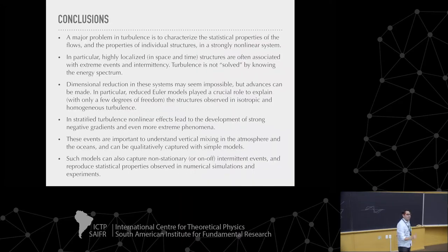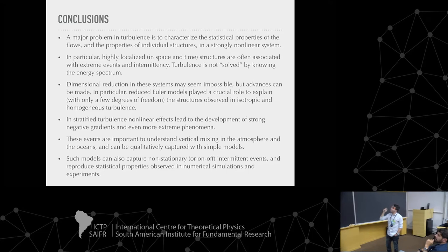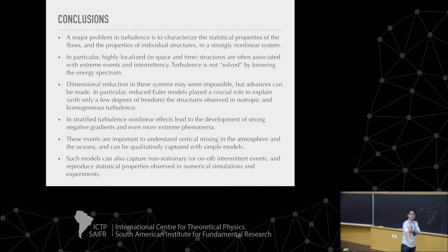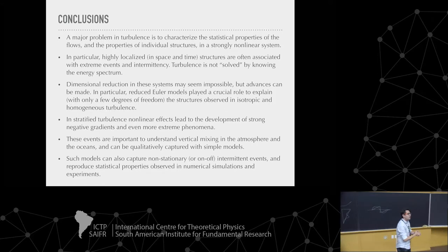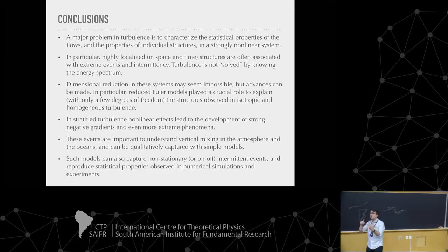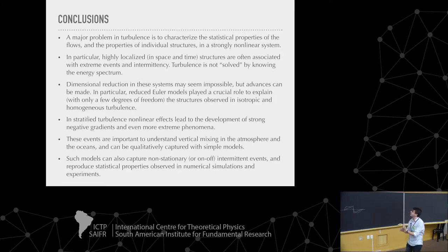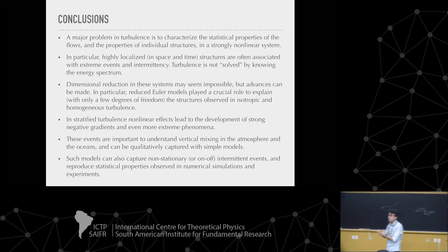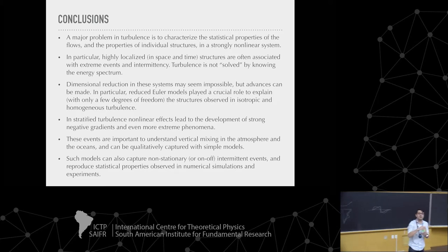To summarize: turbulence extreme events are very important. They are not just a small correction to isotropic and homogeneous turbulence — they play a crucial role in controlling transport, formation of patterns, and clustering of particles. Remarkably, these problems can be approached using reduced models which are nonlinear, have several degrees of freedom, but are substantially smaller than the original system. Thank you very much.